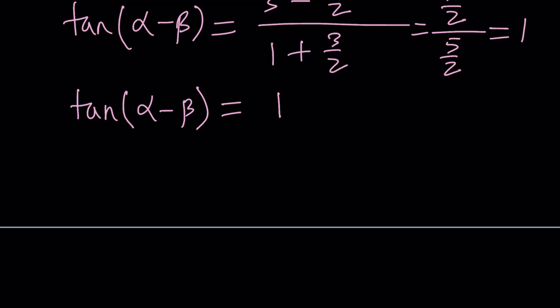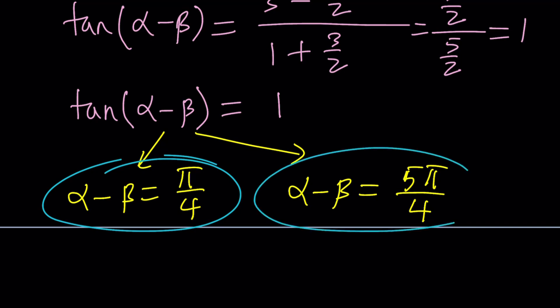From here, alpha minus beta can be pi over 4. Obviously, it's in the first quadrant. But it can also be in the third quadrant, because in the third quadrant, tangent is positive, right? You need to know that. So make sure you know your unit circle well. Okay, that's important. Now, we got these two values. What are we going to do with them? Are those the answers? Can there be more than one?